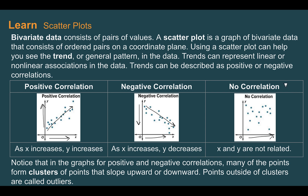Notice in the graphs, for positive and negative correlations, many of the points form clusters that slope upward or downward. A positive correlation would have points clustered together in a positive slope type way. Same with negative correlation — they're clustered together, almost like they're making a negative slope. If you have a point that's kind of out in the middle of nowhere, not clustered with the rest, this would be called an outlier — it's away from the rest of the points.